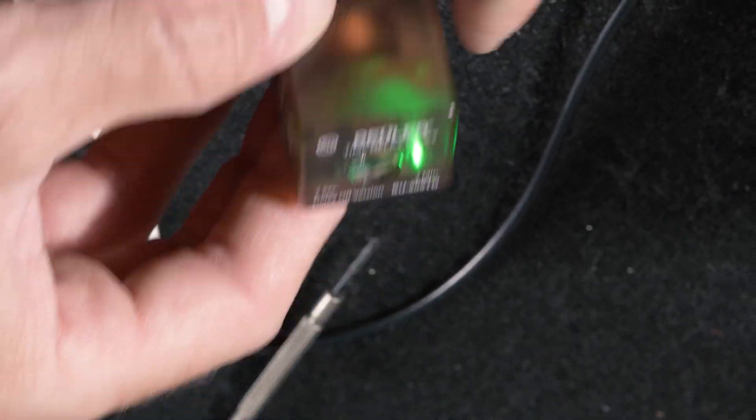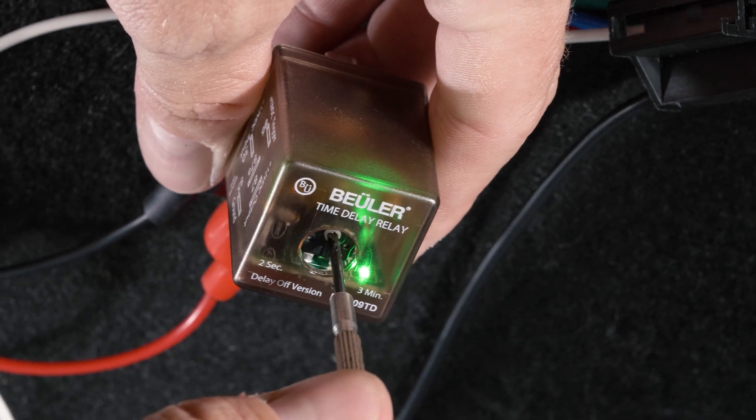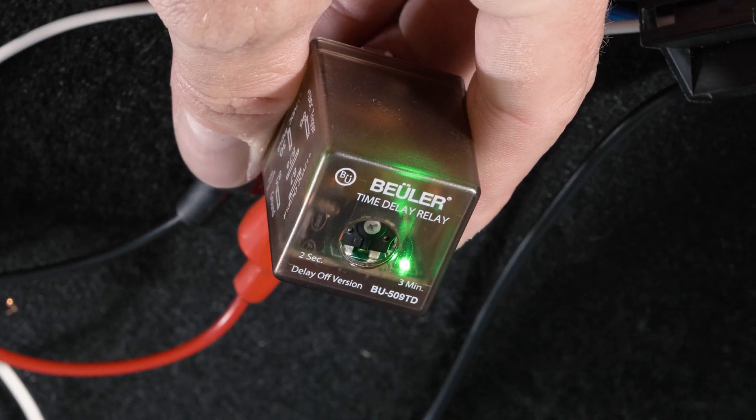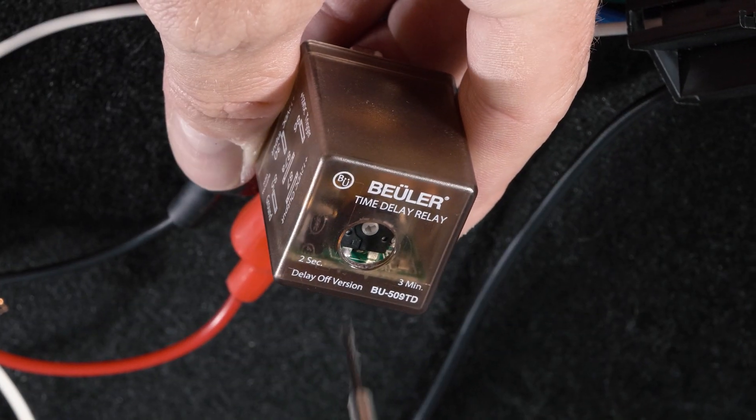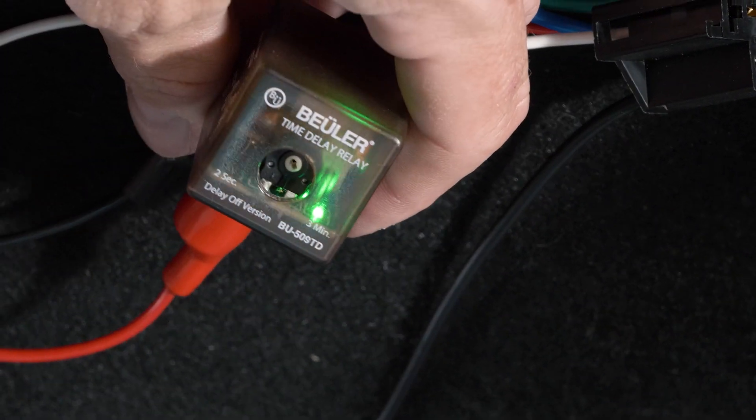And now if we go ahead and trigger it, we already know that this is too long. So we want to adjust it down and you'll see it'll turn off. So this makes adjusting it much quicker than the previous model.